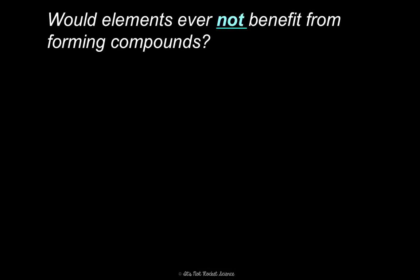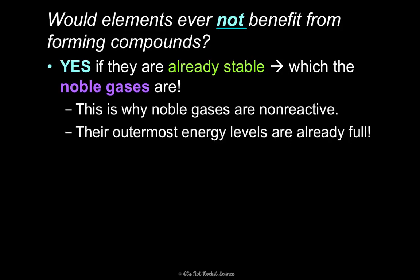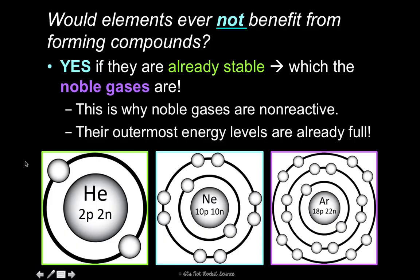Would elements ever not benefit from forming a compound? Of course — if they're already stable. Elements like the noble gases are already stable. You should have learned from our last unit that the noble gases, group 18, are non-reactive elements. Now we can understand why: their outermost energy levels are full. Helium only has one energy level that holds two, so it's full and stable. Neon has its eight, argon has its eight. So noble gases have that full outer energy level, which makes them already stable and very unlikely to form a compound — because if they did, they would become less stable.